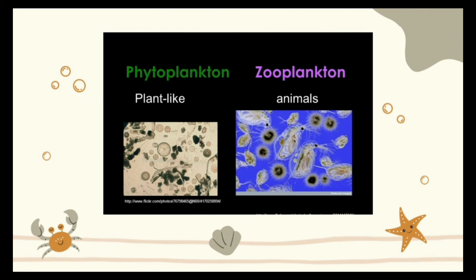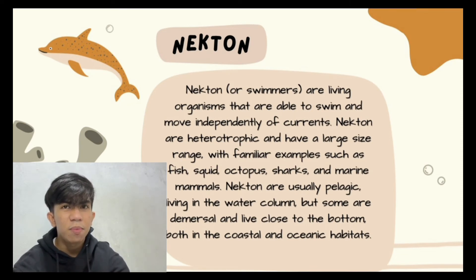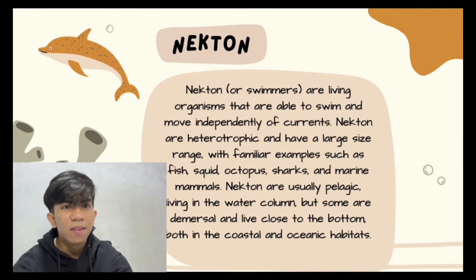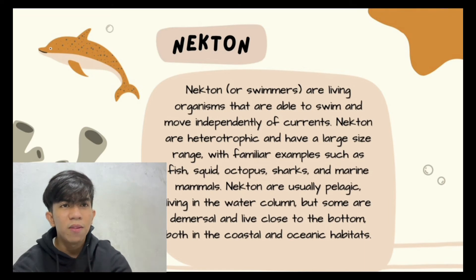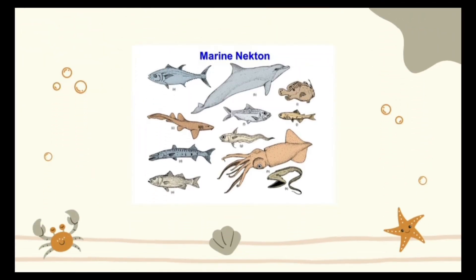Here are some examples of planktons. The second group are nekton. Nekton are living things that swim through the water. They may live at any depth in the photic or aphotic zone. Most nekton are fish, although some are mammals. Fish have fins and streamlined bodies to help them swim, and they also have gills to take oxygen from the water. Here are some examples of nekton.